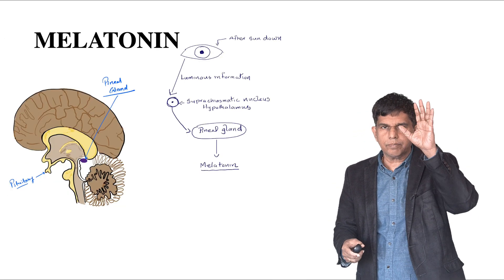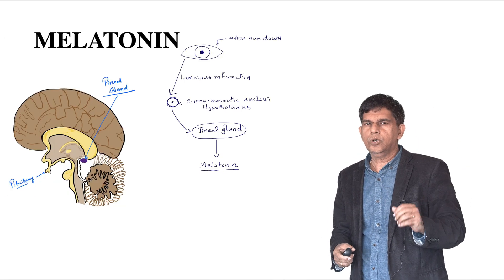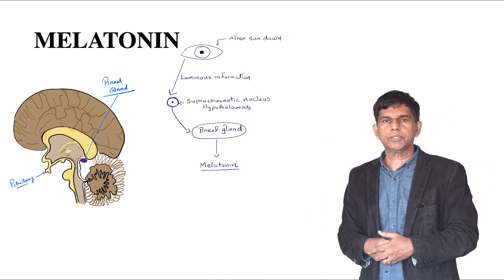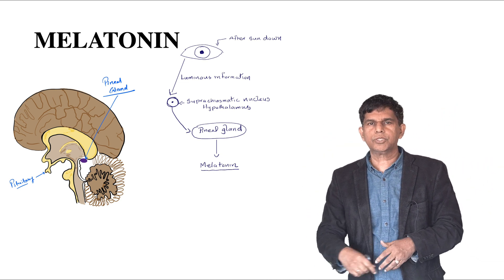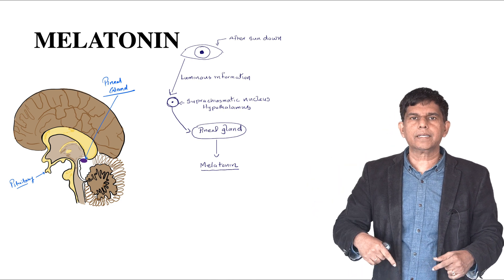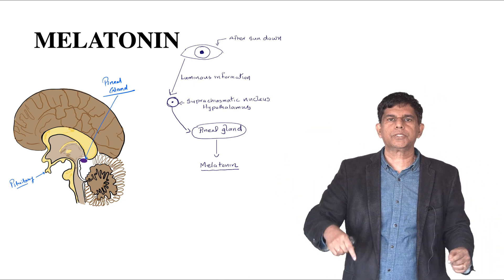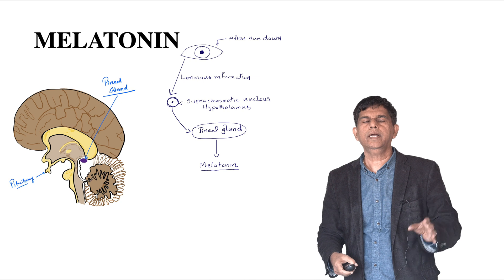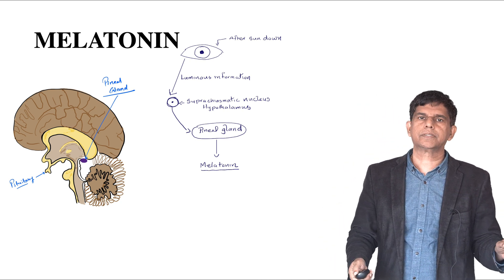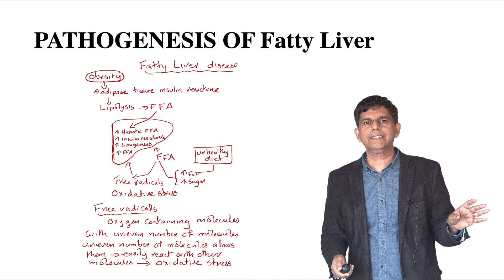So how does melatonin get produced in the body? When it becomes dark, the retina sends luminous information to the suprachiasmatic nucleus in the hypothalamus. The hypothalamus signals the pineal gland, and the pineal gland produces melatonin, which then starts working on circadian rhythm and many other things.